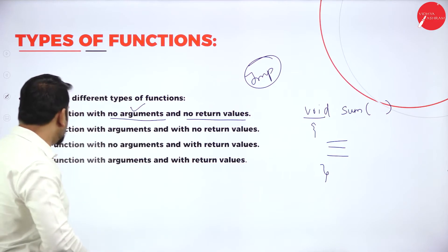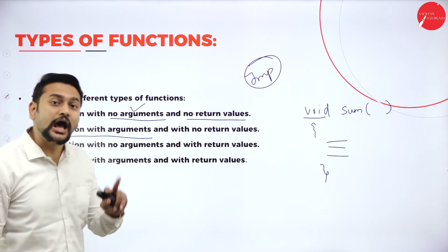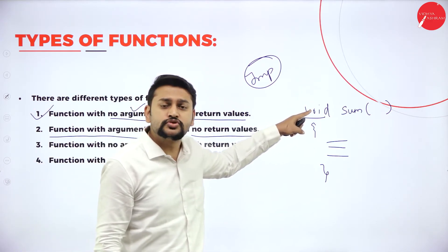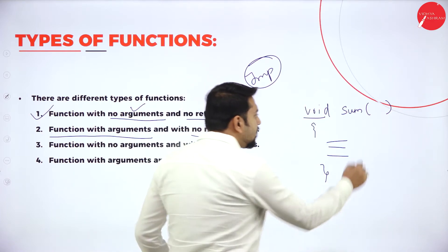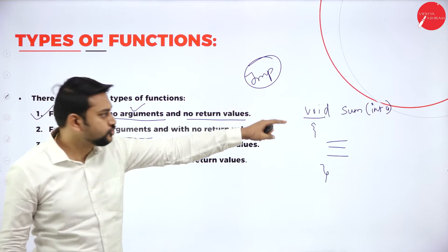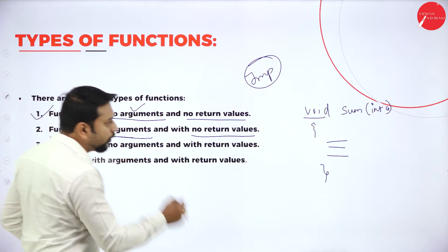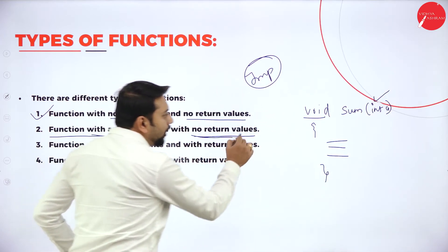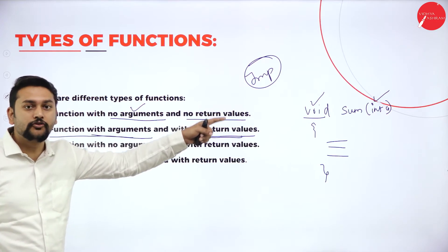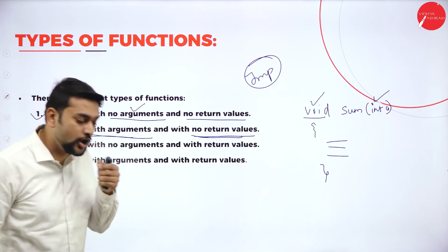When it comes to the second type: function with arguments but no return values. No return values means void. With arguments means I will write something like int a inside the parentheses. Do I have arguments? Yes. Do I have void? Yes, because no return value. So this kind of function is the second type — function with arguments and no return type.